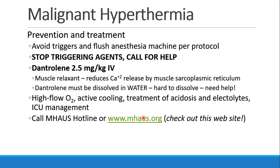There is dantrolene now available in a special concentrated form where all you need is one syringe — some centers have that, which is much easier and faster to give. MH is also treated with high-flow oxygen to wash away the triggering agent and oxygenate the cells. The patient may need active cooling with a cooling blanket, ice packs around the head, axilla, or inguinal region, treatment of acidosis and electrolyte abnormalities, and they will almost certainly need to go to the ICU. We recommend calling the MHAUS hotline — the Malignant Hyperthermia Association of the U.S. — or visiting mhaus.org.